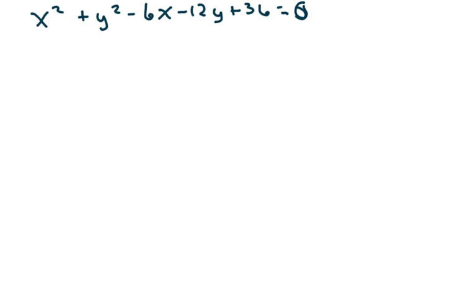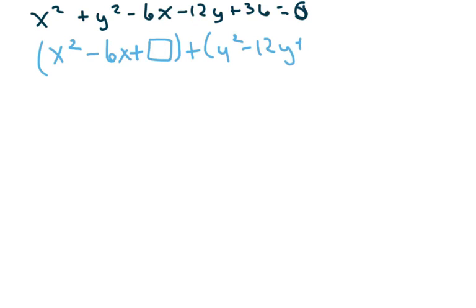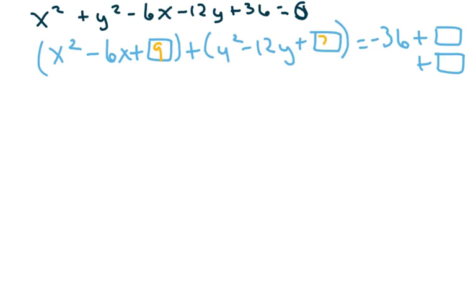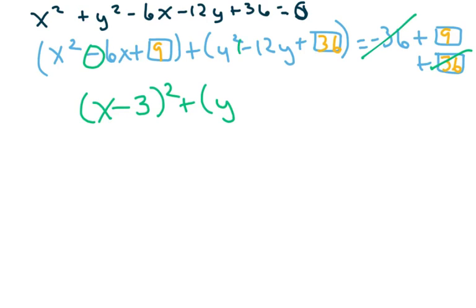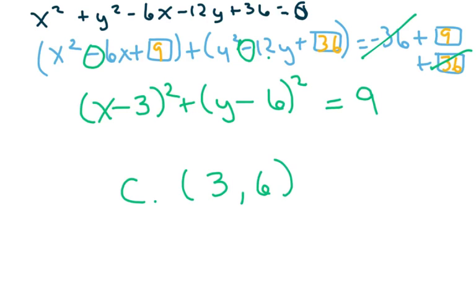Here's another jumbled one. I put it together as x squared minus 6x plus box, plus y squared minus 12y plus box, equals negative 36 plus box plus box. Half of 6 is 3, squared gives 9. Half of 12 is 6, squared gives 36. I put my 9 and 36 on the right — the 36 cancels — and simplify: x minus 3 squared, y minus 6 squared, equals 9. Center is 3, 6 and radius equals 3.